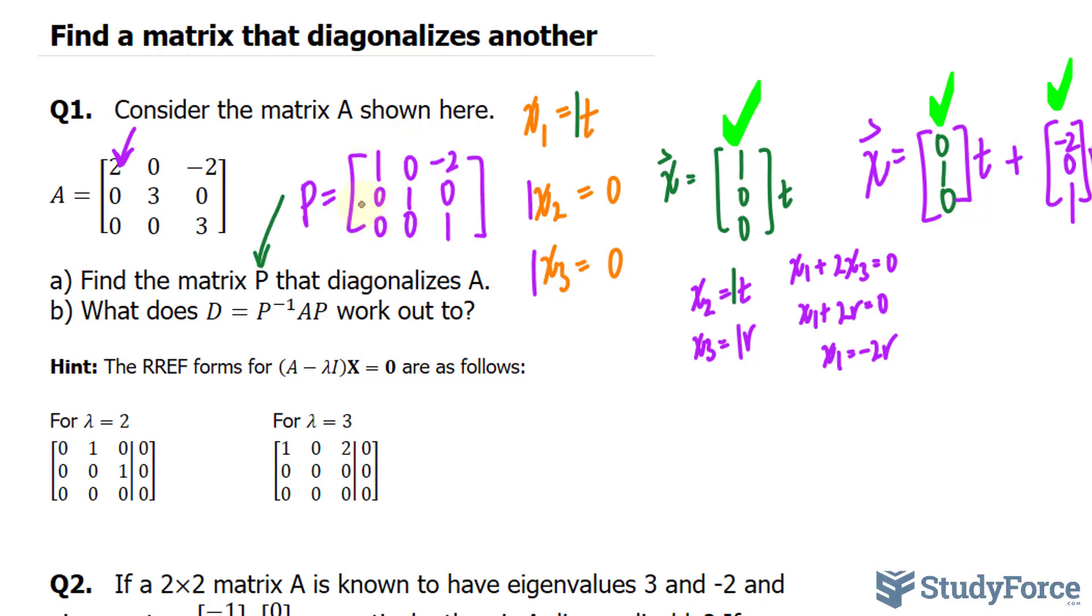So if I transpose this matrix right now, I will get 1, 0, negative 2, 0, 1, 0, 0, 0, and 1. If I multiply this now by its determinant, I'll skip showing you how to find the determinant. The determinant of this matrix happens to be 1, so multiplying each of these by 1 gives you the exact same thing. We multiply this now by A, and we multiply it again by P.